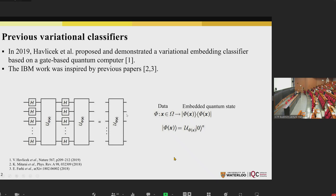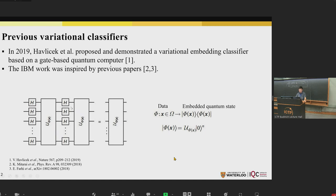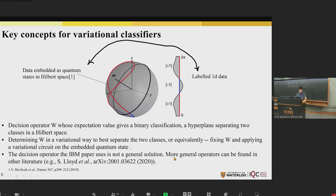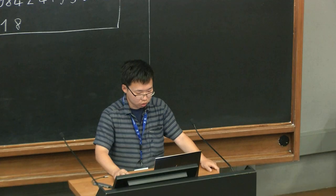In a 2019 paper, Havlick proposed and demonstrated a variational embedding classifier based on a gate-based quantum computer. In this IBM work, the data X is embedded as a quantum state in a Hilbert space by a circuit, where U(X) is a data-dependent entangling gate and H are the Hadamard gates. The circuit evolves some trivial initial state to some embedded state. A key concept here is a decision operator W, whose expectation value gives a binary classification.